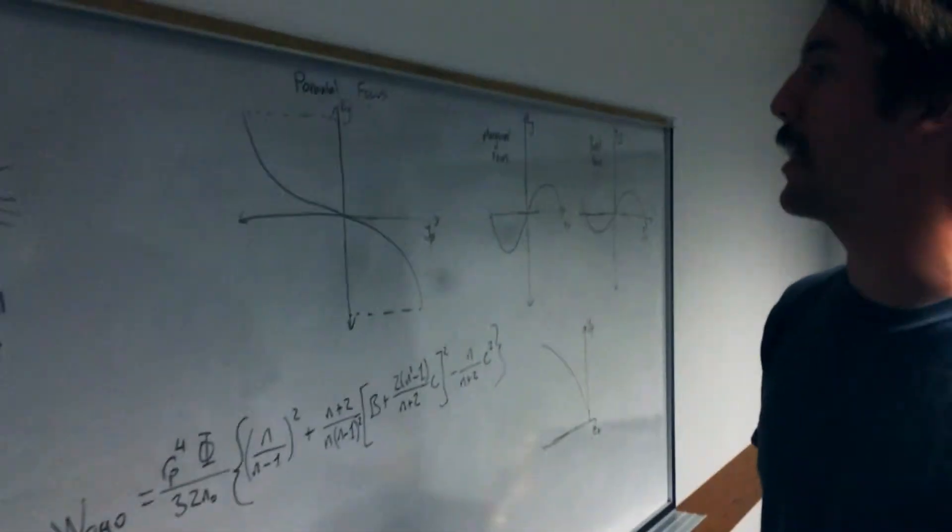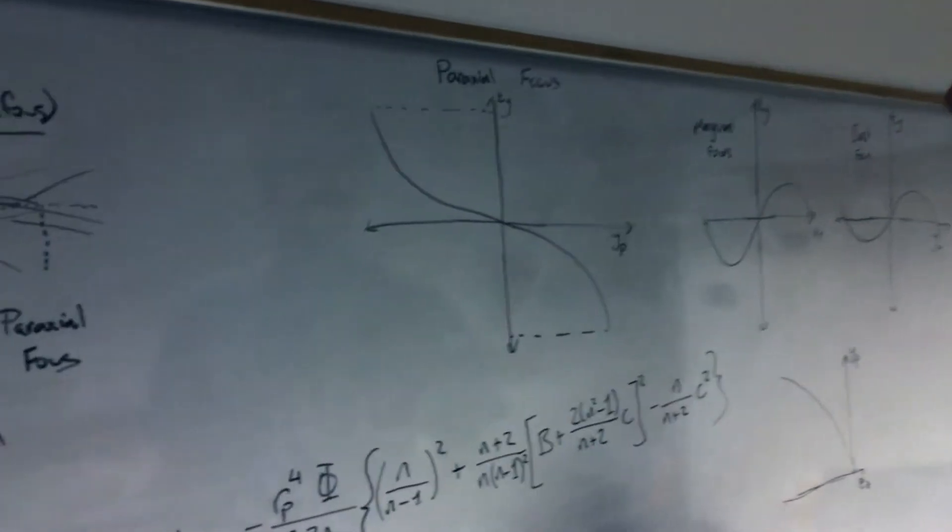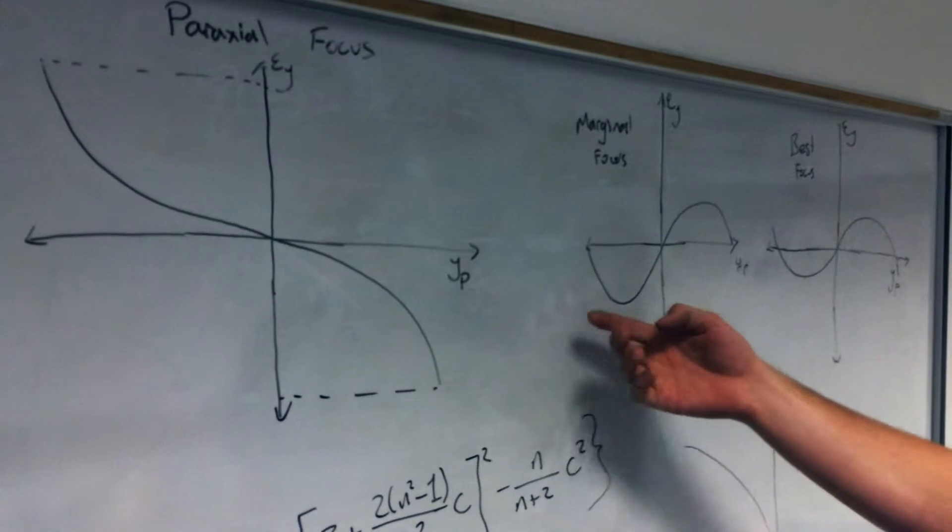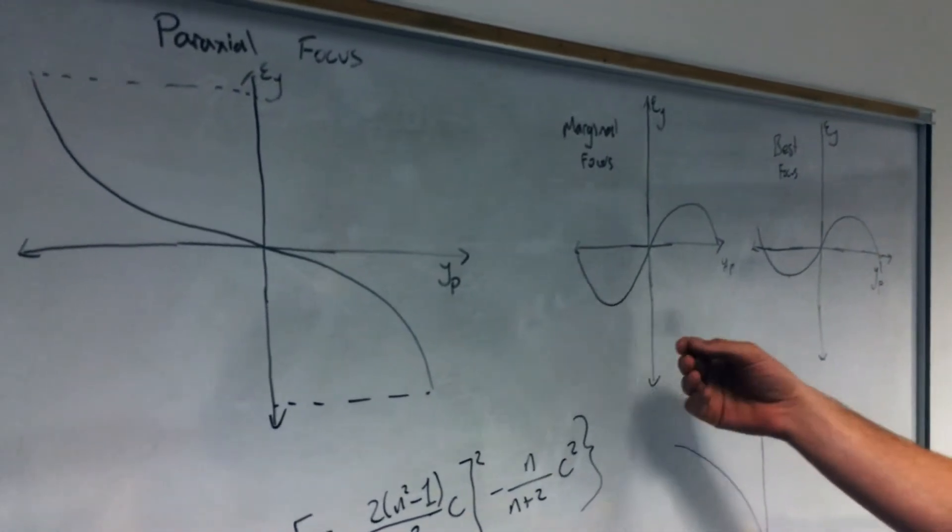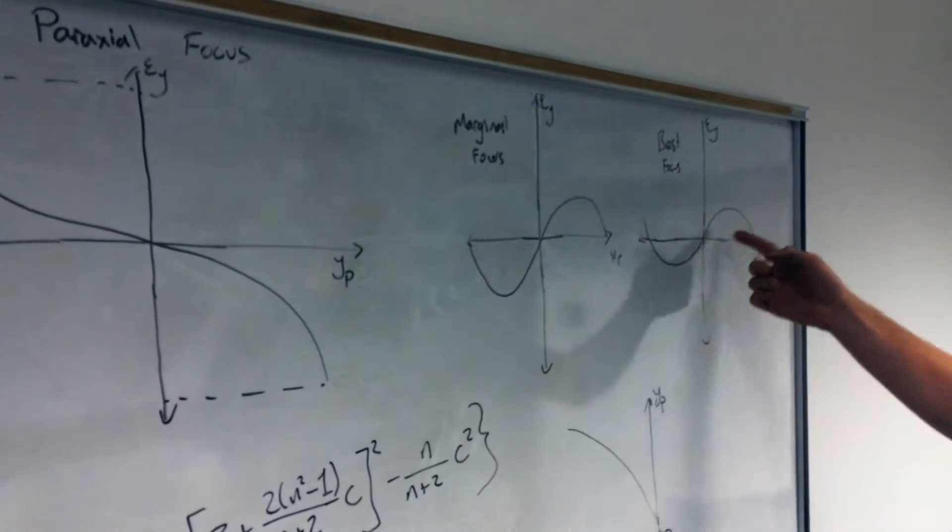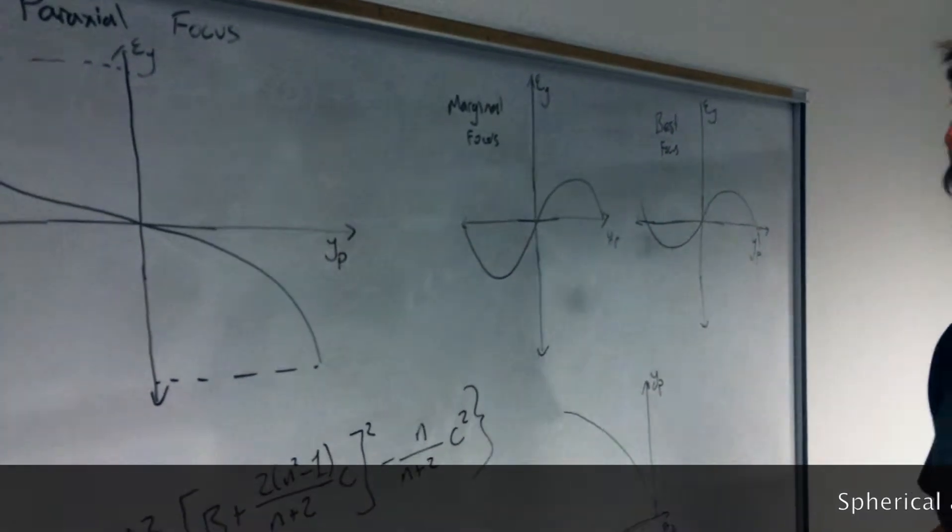Here we have a plot for the paraxial focus of the ray error dependent on pupil position. And when we defocus it, we can get the marginal focus, which gives us less ray error. And if we move it to the position of best focus, we'll get even less ray error. And that's all done by defocusing the lens.